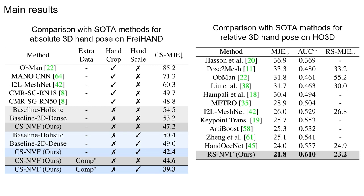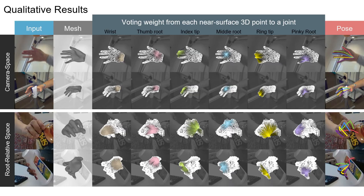NVF exhibits state-of-the-art performance for camera space 3D hand pose estimation on FreiHAND. We also adapt NVF to the classic task of root-relative 3D hand pose estimation, for which NVF also achieves state-of-the-art results on the HO3D dataset.